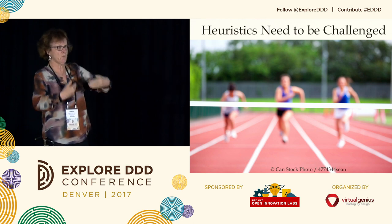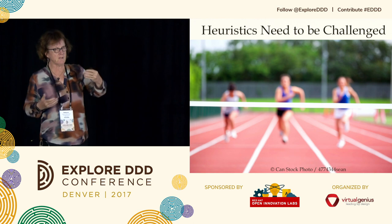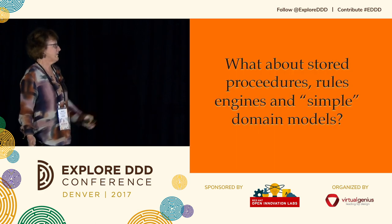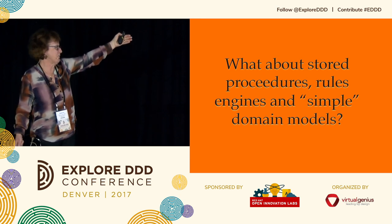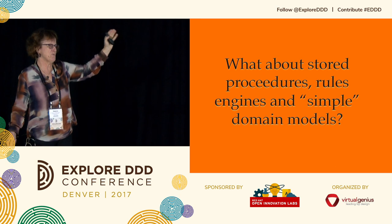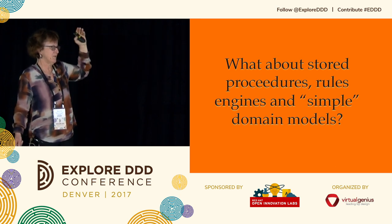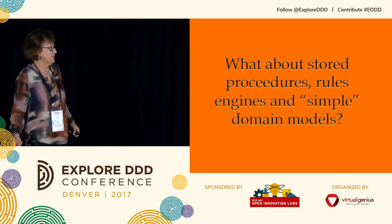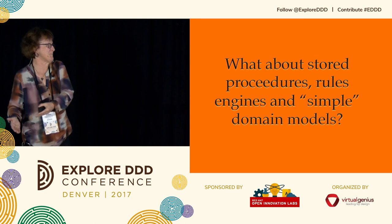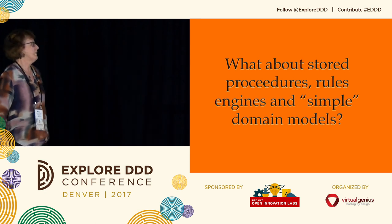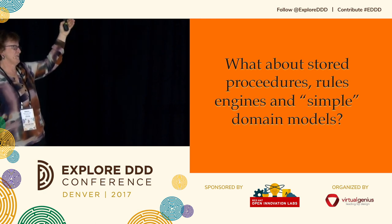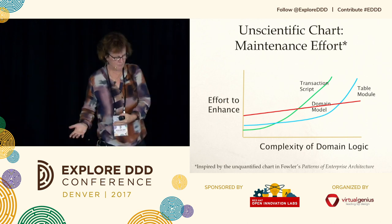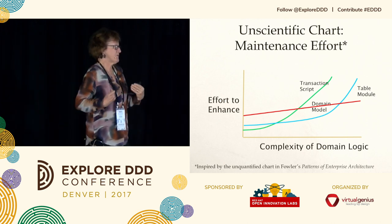You always need to challenge heuristics if you want to grow. So taking those three heuristics from Fowler — how can I challenge them? In the real world there's other stuff: stored procedures, rules engines, simpler or anemic domain models. I once did an assessment of a system with stored procedures with hundred-argument methods — very scary. Fowler had this effort-to-enhance versus complexity-of-domain-logic graph: transaction scripts go great but as complexity increases, the effort goes way up.